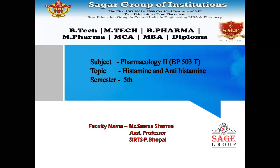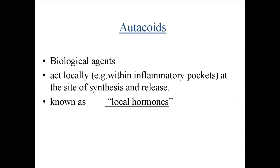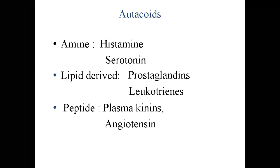This is an example discussing autocoids. In this module, the second topic is histamines and antihistamines. We have studied that autocoids are synthesized and released locally. They are also called local hormones, meaning locally, in a particular area, they are synthesized and released. In a particular restricted part they are released — this is what we mean by local hormones.